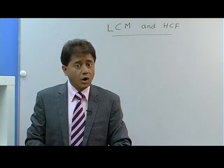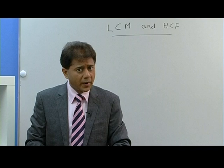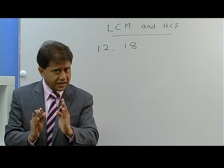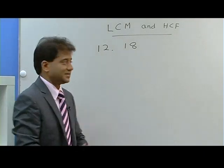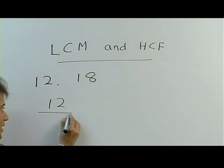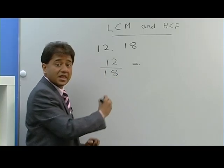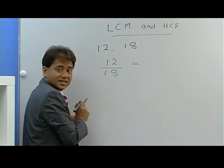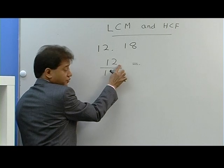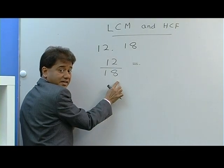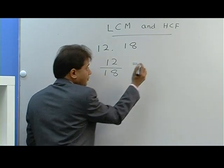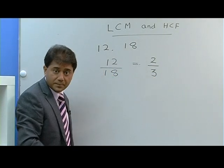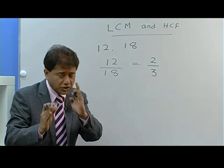Let's say for example if you want to find the LCM of 12 and 18. What we do is write 12 and 18 in the lowest term — so I write 12 over 18. Now I reduce it to the lowest term. You can divide both by 6: 12 divided by 6 is 2, and 18 divided by 6 is 3. So this is reduced to the lowest term.